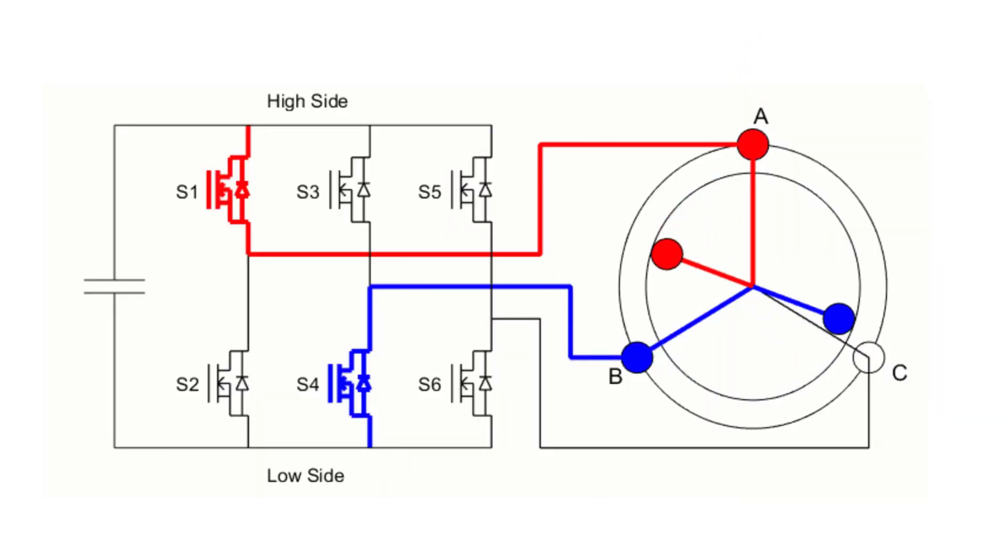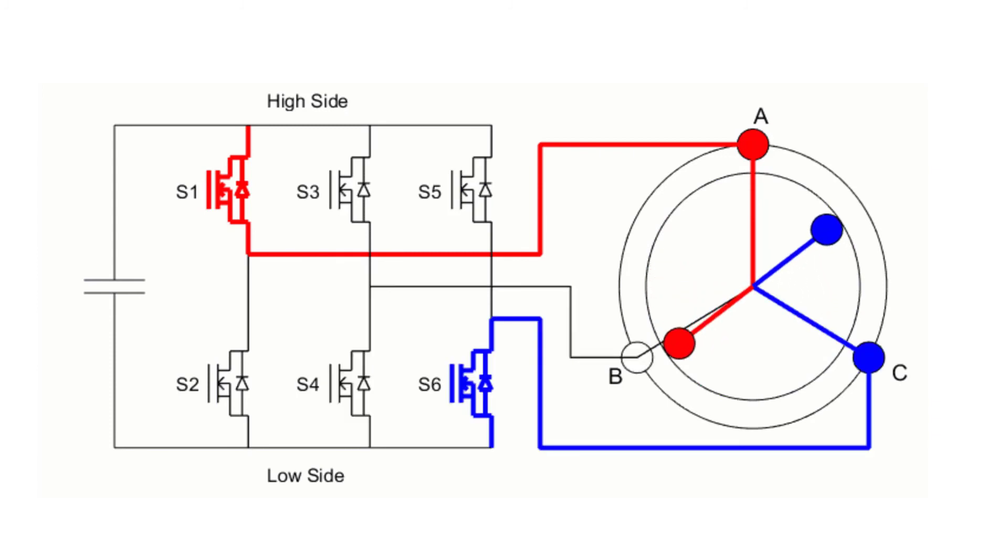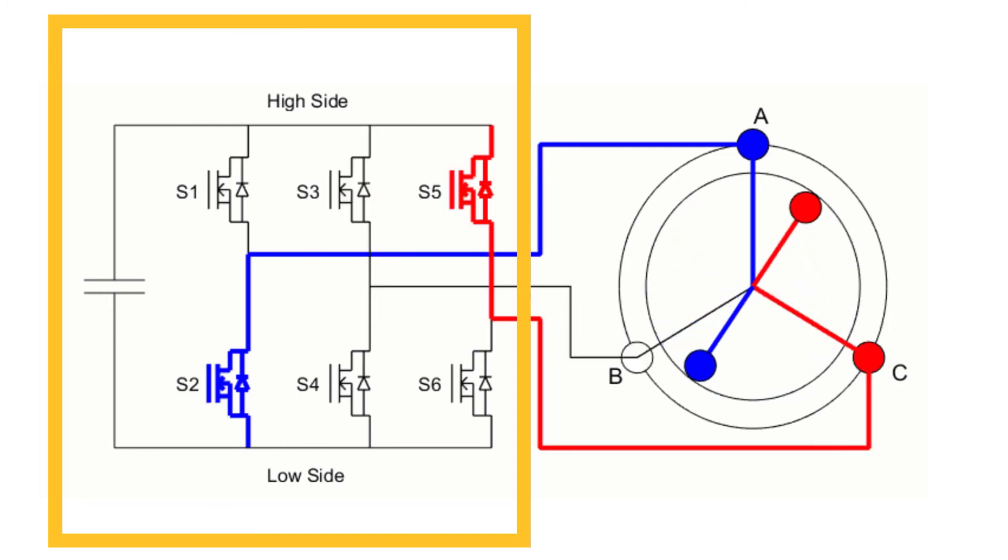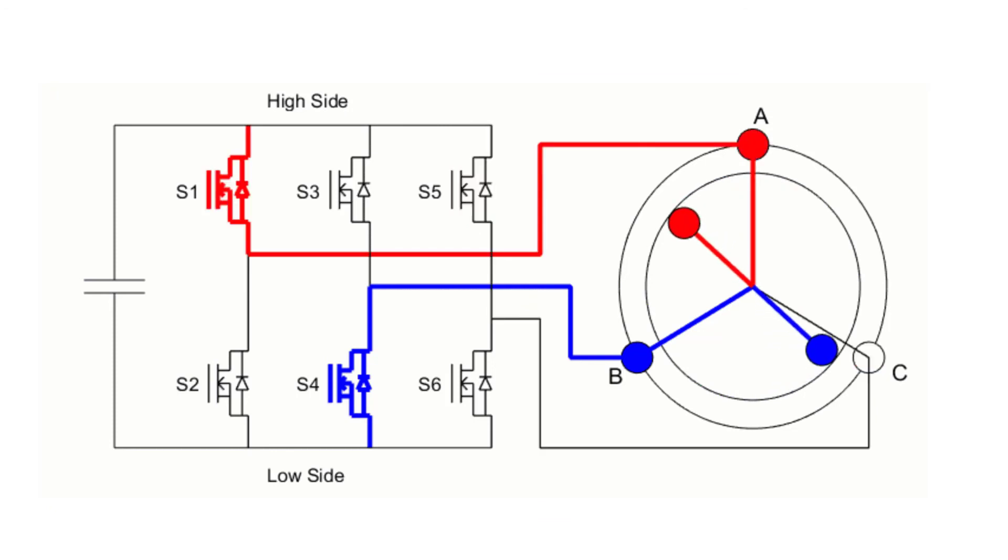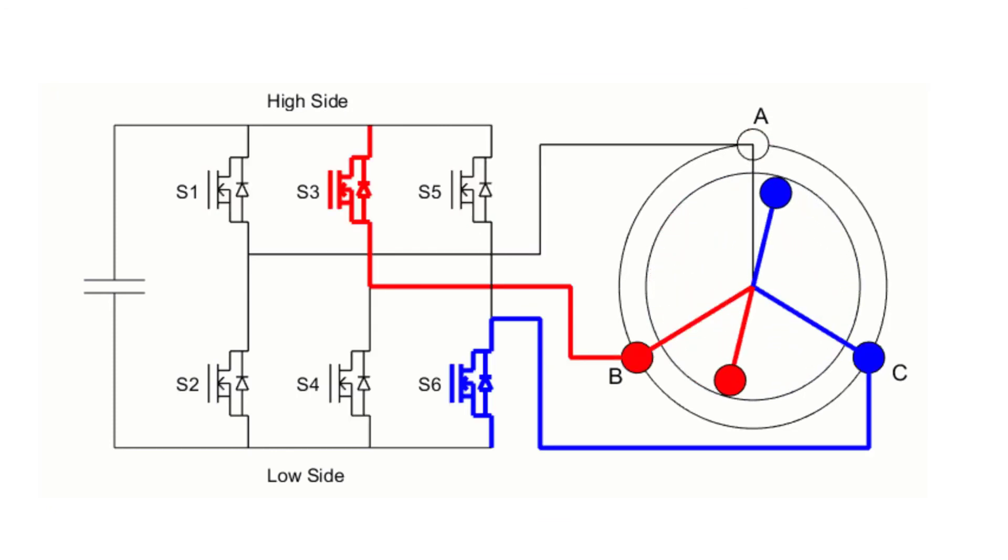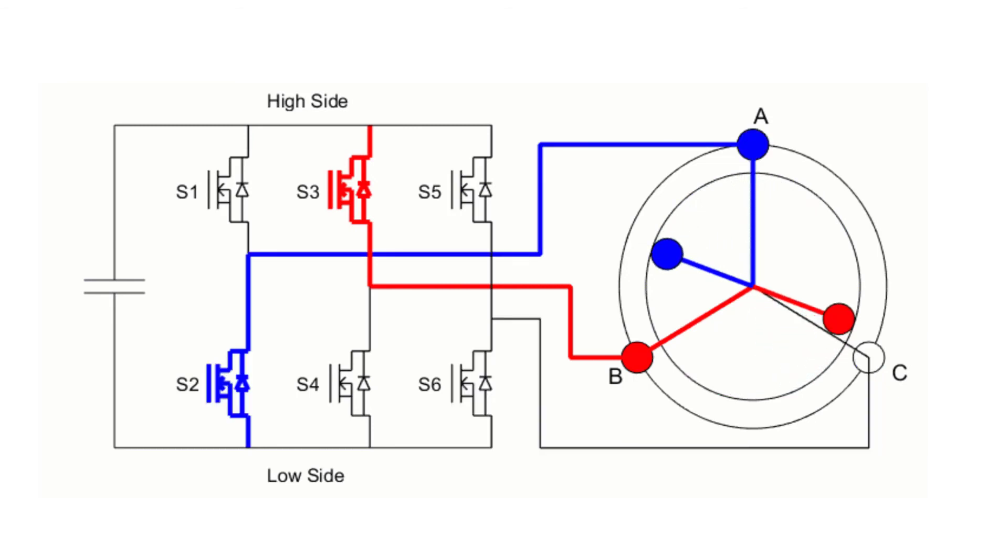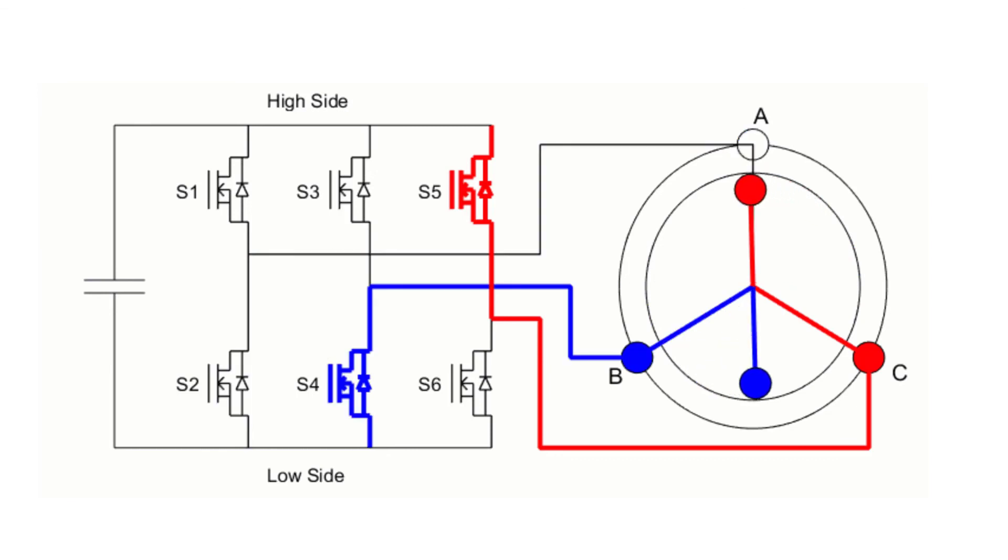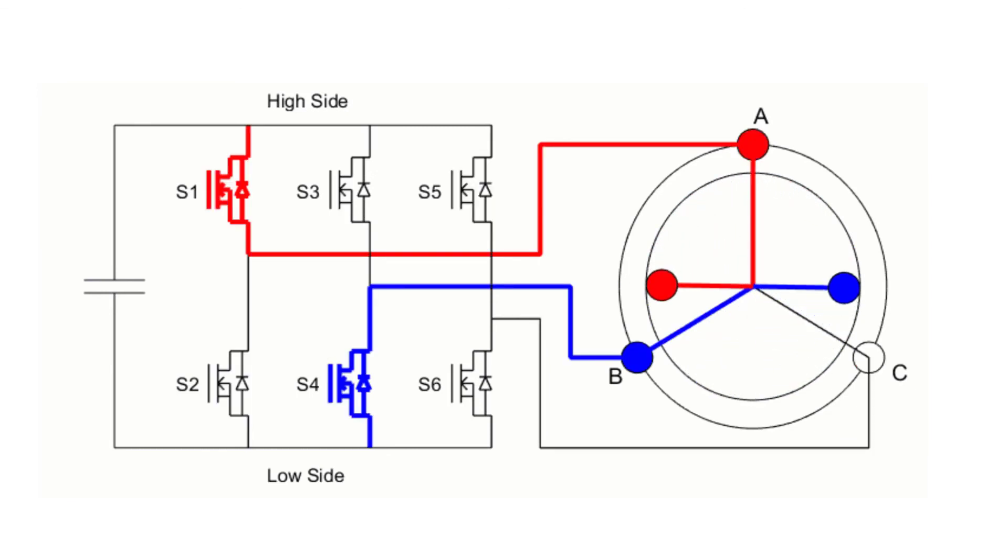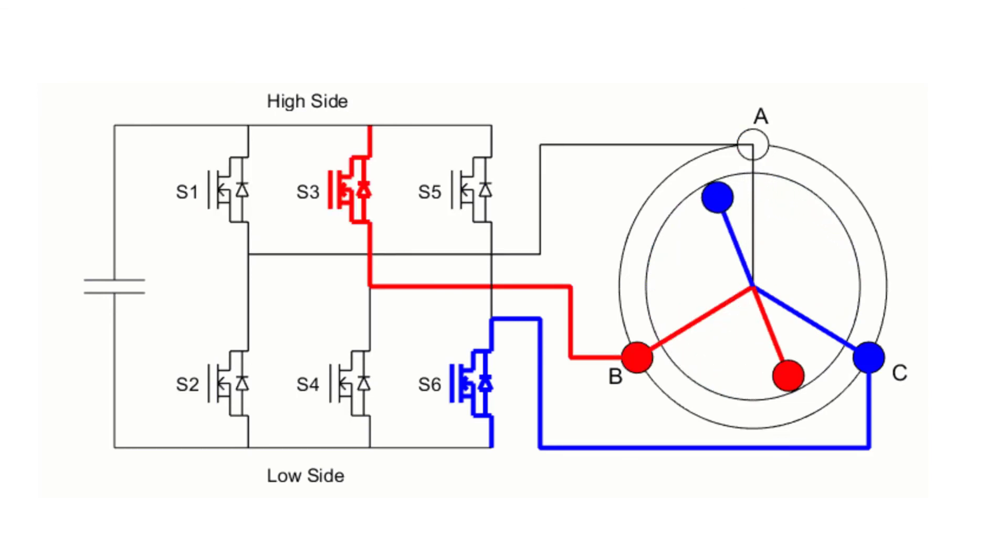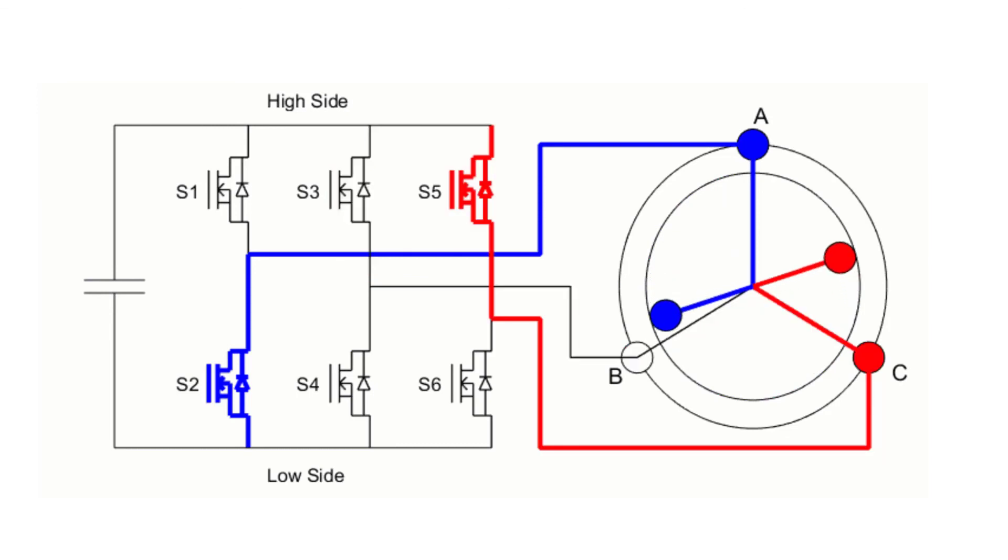To control the phases for the six-step commutation, a three-phase inverter is used to convert the DC power into three-phase currents, which are shown on the animation with red and blue. To supply positive current to one of the phases, the switch connected to that phase at the high side needs to be turned on. And for negative current, the low side switch needs to be on. A constant voltage gets converted by the three-phase inverter to keep the motor at a constant speed.